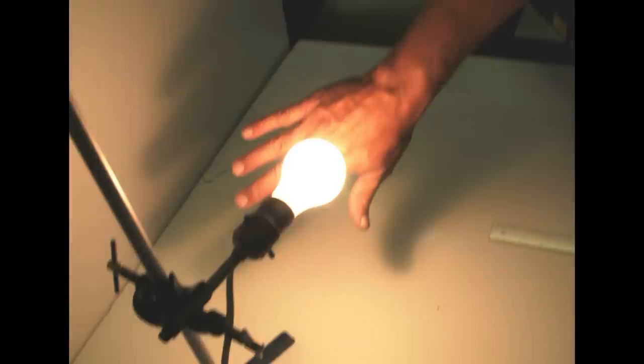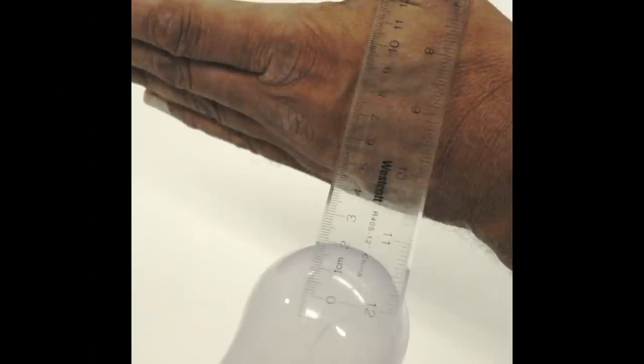In practice, it is easiest to place your hand with the light bulb on, then turn off the bulb for the distance measurement, keeping your hand in place. Be sure to measure from the center of the bulb, not the surface.